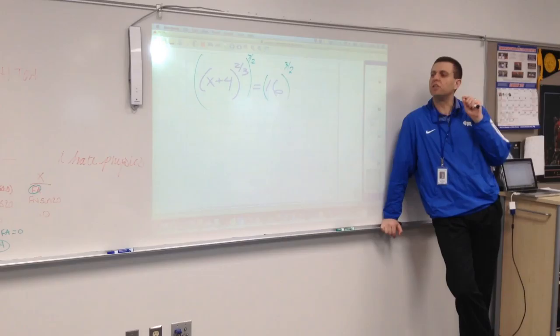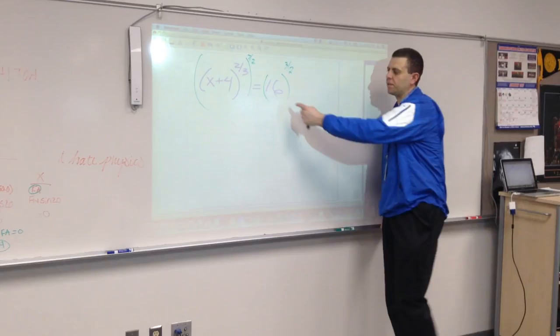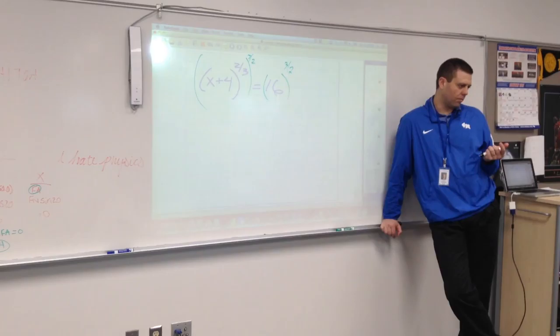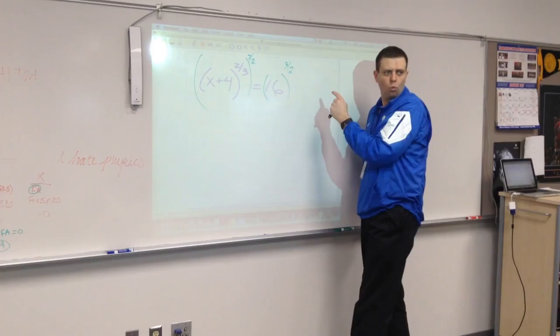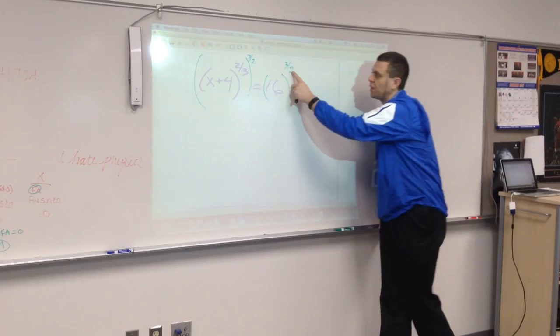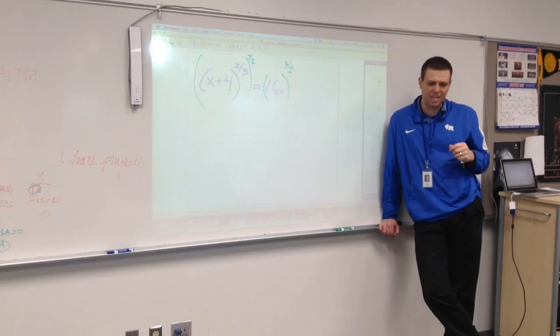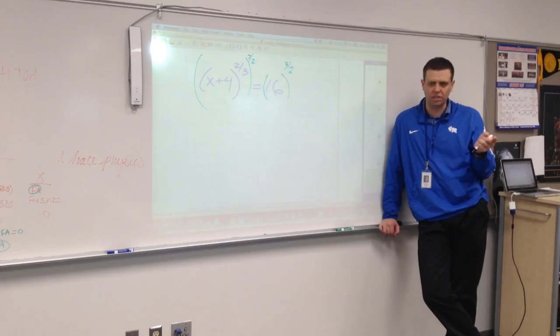Now, the only problem with doing this is a lot of people tend to forget the plus or minus by doing it this way. Because if you go type into your calculator, 16 to the 3 halves power, it's only going to give you the positive number. So how do you know there's going to be a plus or minus? Well, when you raise something to the 3 halves power, what type of root are you doing? A square root. You can tell that by the denominator, right? If that denominator is even, you're doing an even root to both sides of the equal sign. If you do an even root to both sides of the equal sign, you need plus or minus.